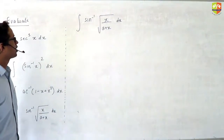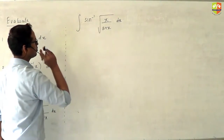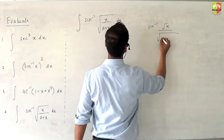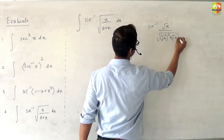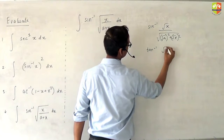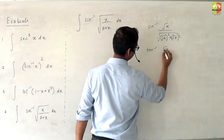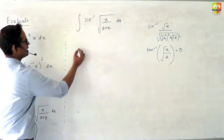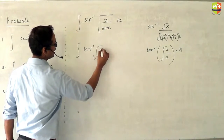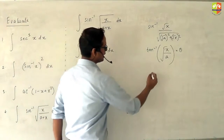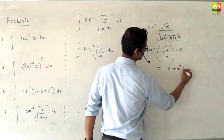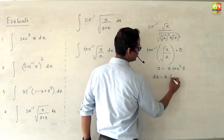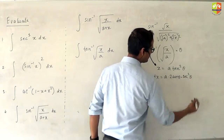Now let's discuss the next problem. We converted the expression to root x over root(a² + something), which is nothing but tan⁻¹(√x / a). Let's call tan⁻¹(√x / a) as θ. So basically you are integrating tan⁻¹(√x / a) dx and calling it θ. That means x equals a·tan²θ, and dx equals a·2·tan θ·sec²θ dθ.